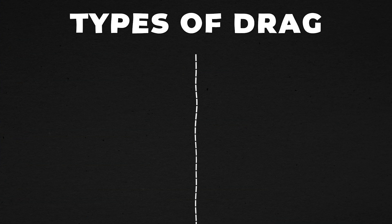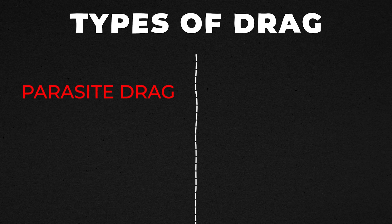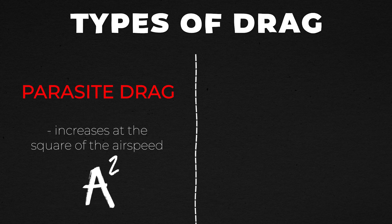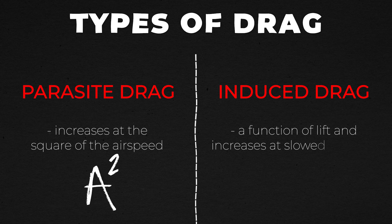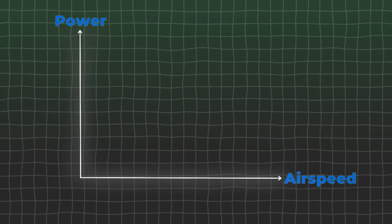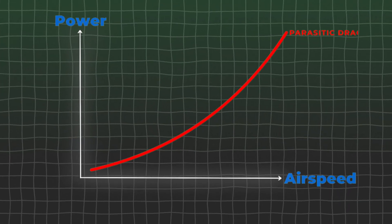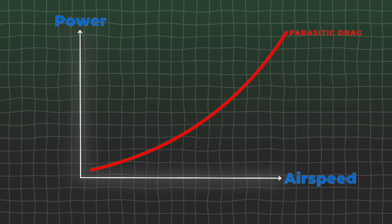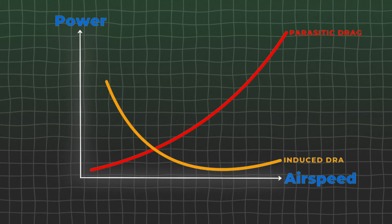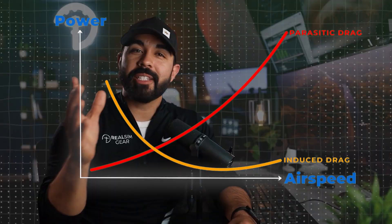That's because there are two types of drag: parasite drag, which increases at the square of our airspeed, and induced drag, or sometimes called pressure drag, which is a byproduct of lift and increases at slower airspeeds. So this graph tells us it takes more power to fly faster, but it also takes more power to fly slower because of induced drag.